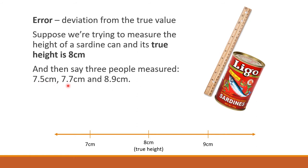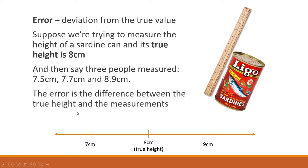Imagine that there are three people who are really clumsy, not good measurers. They got 7.5 centimeters, 7.7, and 8.9. Obviously these are wrong because it's 8 centimeters. The error is the difference between the true height, which is 8 centimeters, and these measurements.